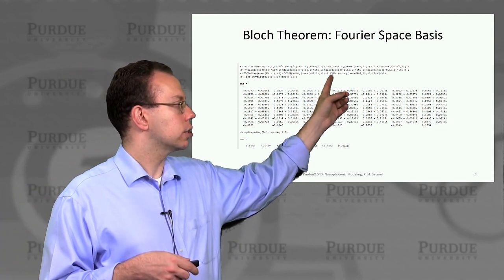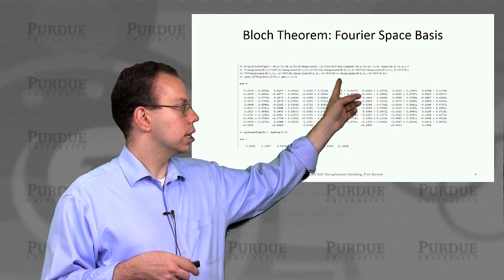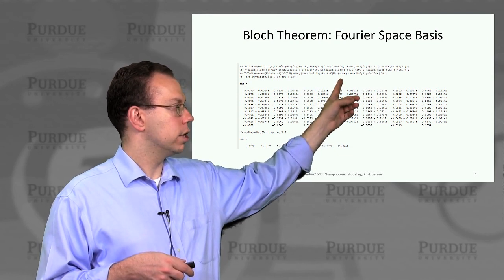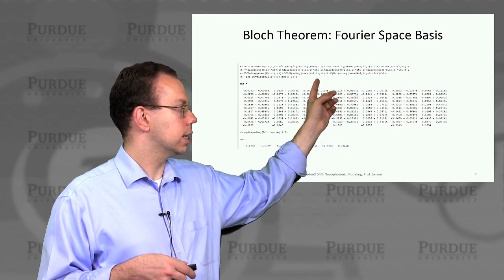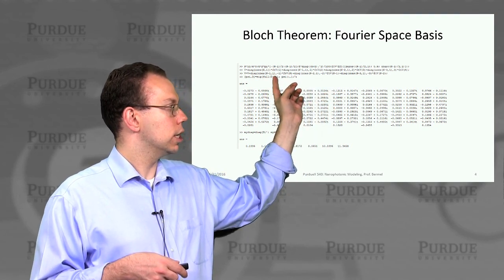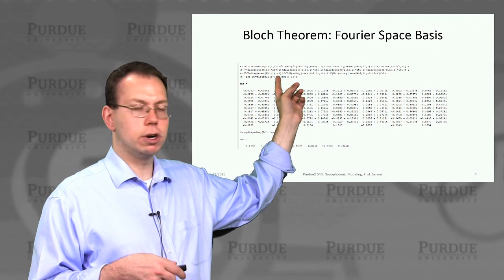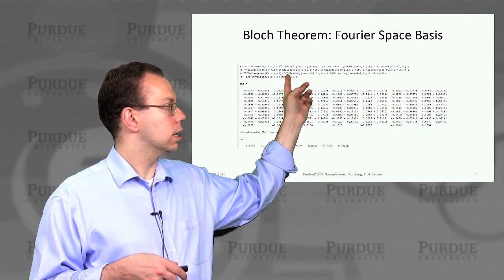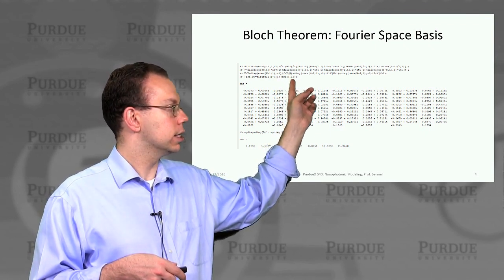And then we can actually set up the Hamiltonian in the Fourier basis, which looks like this. And then we can solve the Hamiltonian, which has the potential component v plus the kinetic energy t, which is on the diagonal.